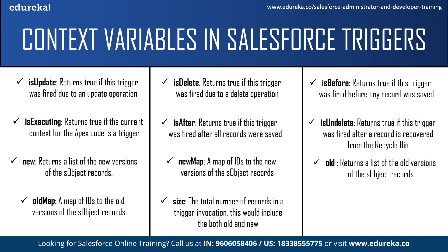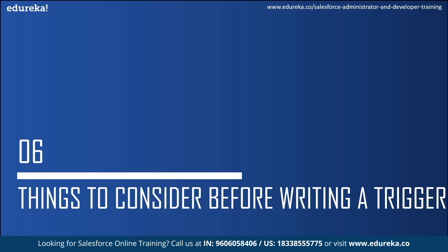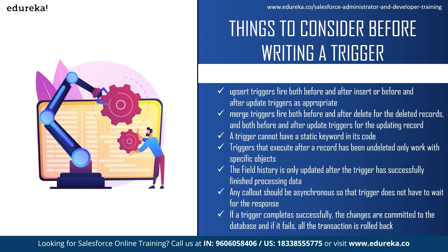Now let us look at things to consider before implementing a Salesforce trigger. First, upsert triggers can fire both before and after insert or before and after update triggers as appropriate. Merge triggers can fire both before and after delete for deleted records and before and after update for updating records. A trigger cannot have a static keyword in its code. Triggers that execute after a record has been undeleted only work for specific objects. Field history is only updated after the trigger has successfully finished processing. Any callout should be asynchronous so that triggers do not have to wait for a response. If a trigger completes successfully the changes are committed to the database; if it fails, the entire transaction is rolled back.